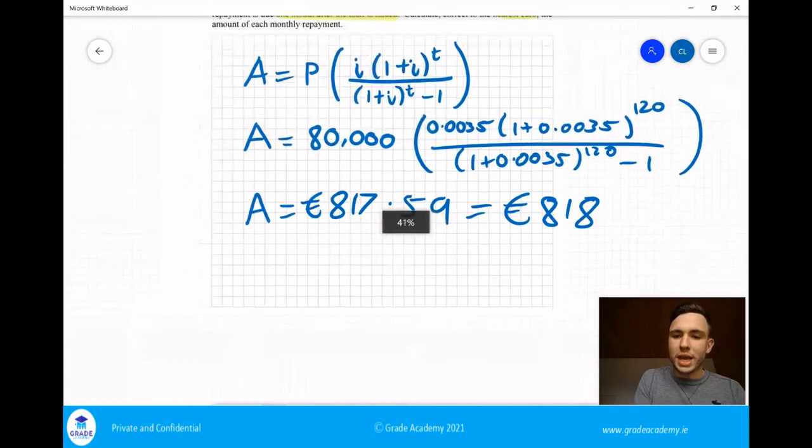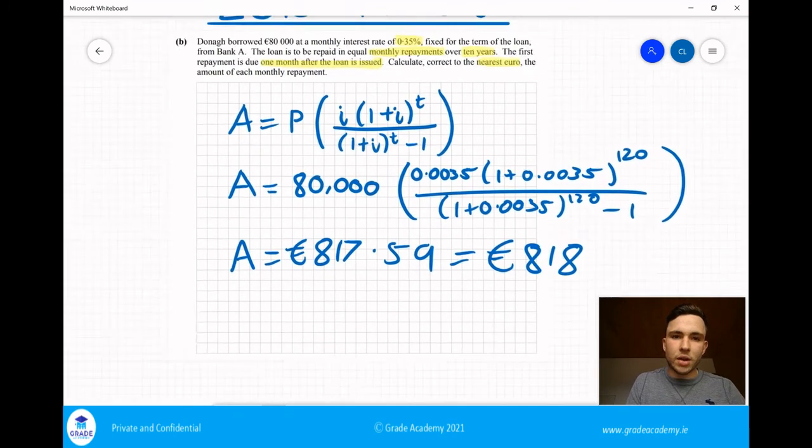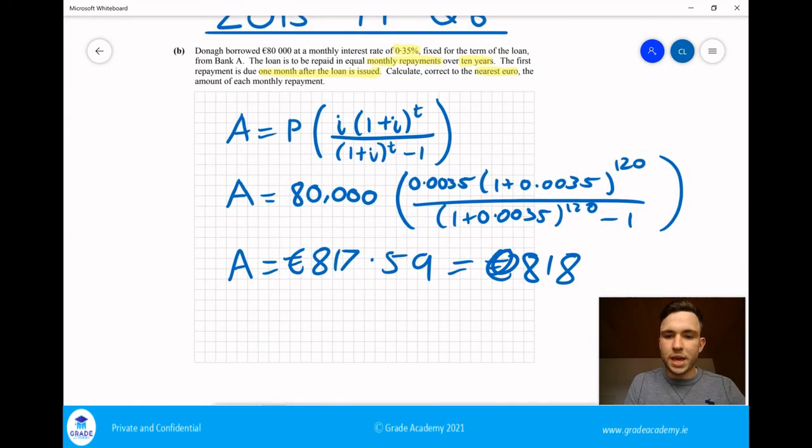So what does that mean? It means that in order for Donica to pay off his loan, he's going to need to pay 818 euro every month for 10 years to pay off his loan. Thank you so much for watching this great academy lecture. Until next time, happy learning.